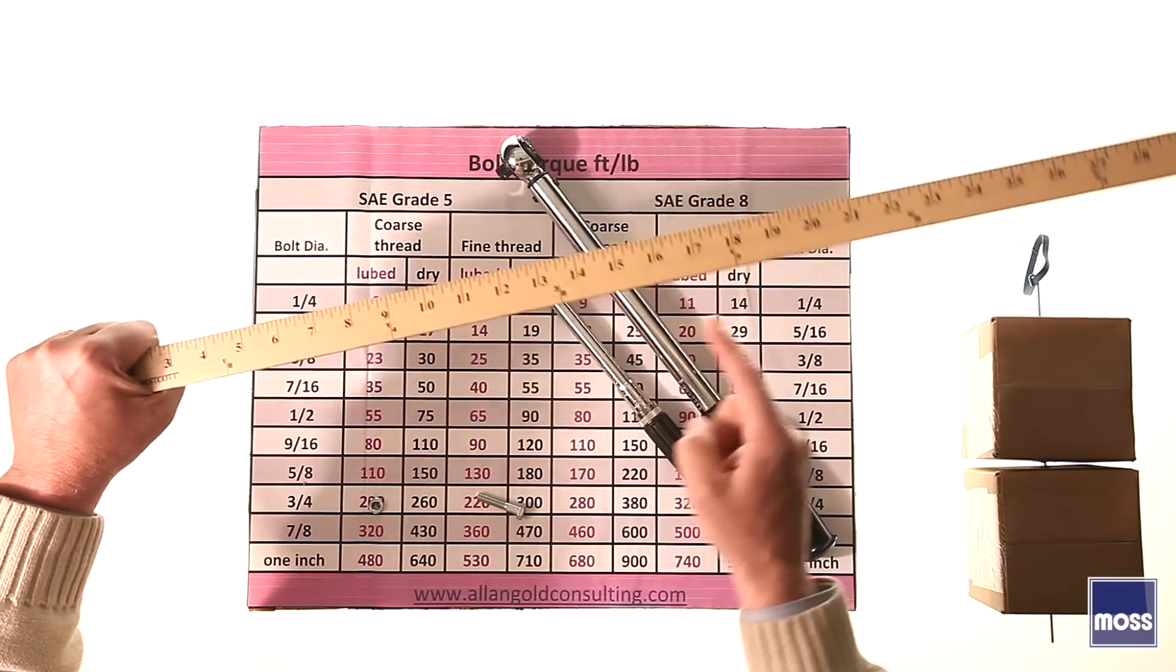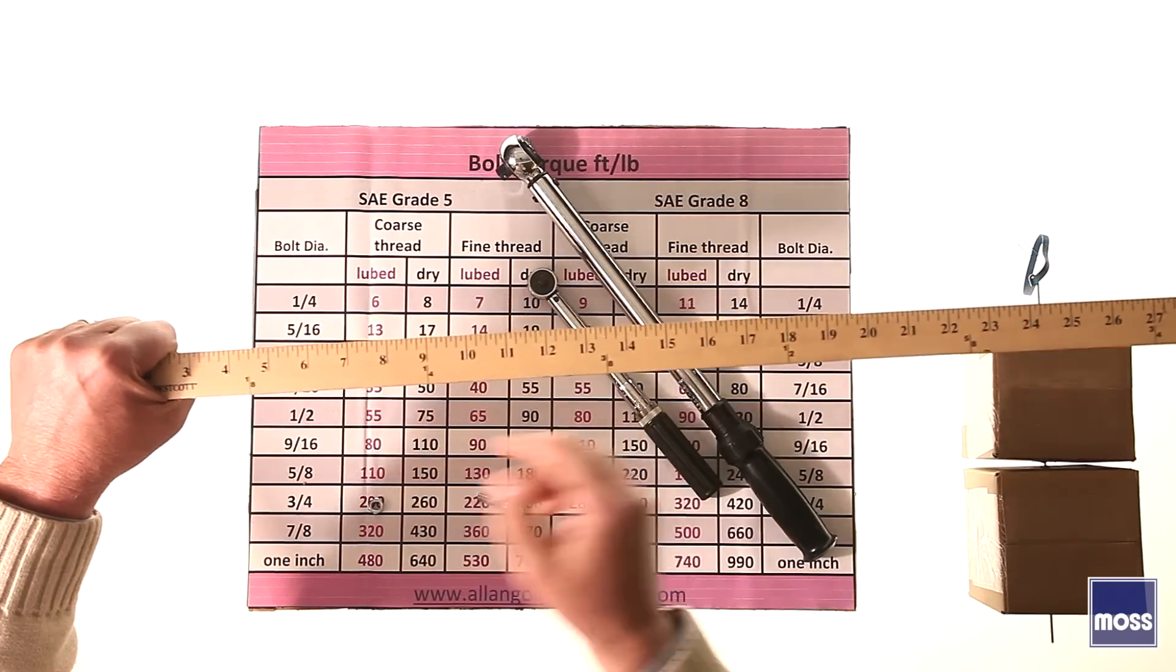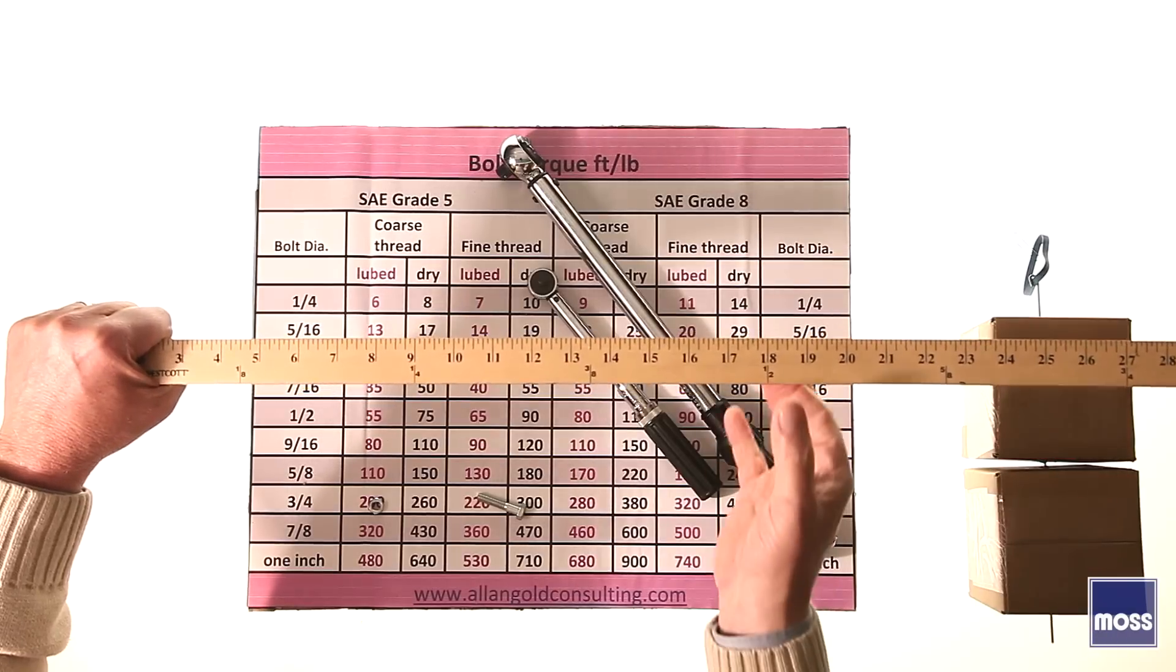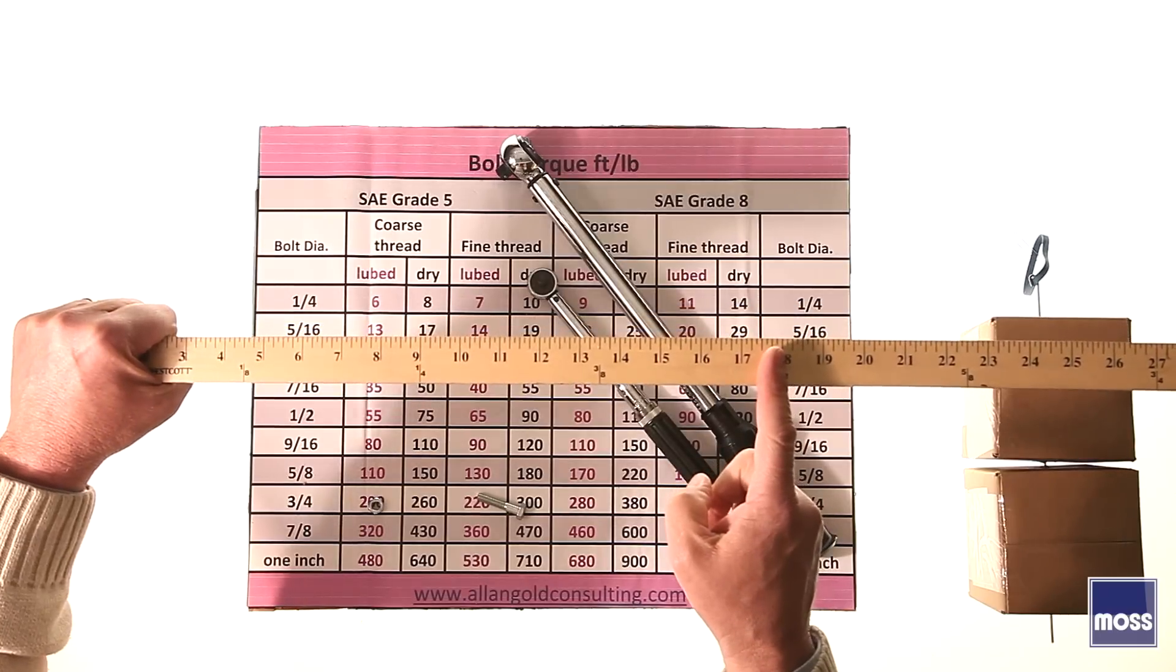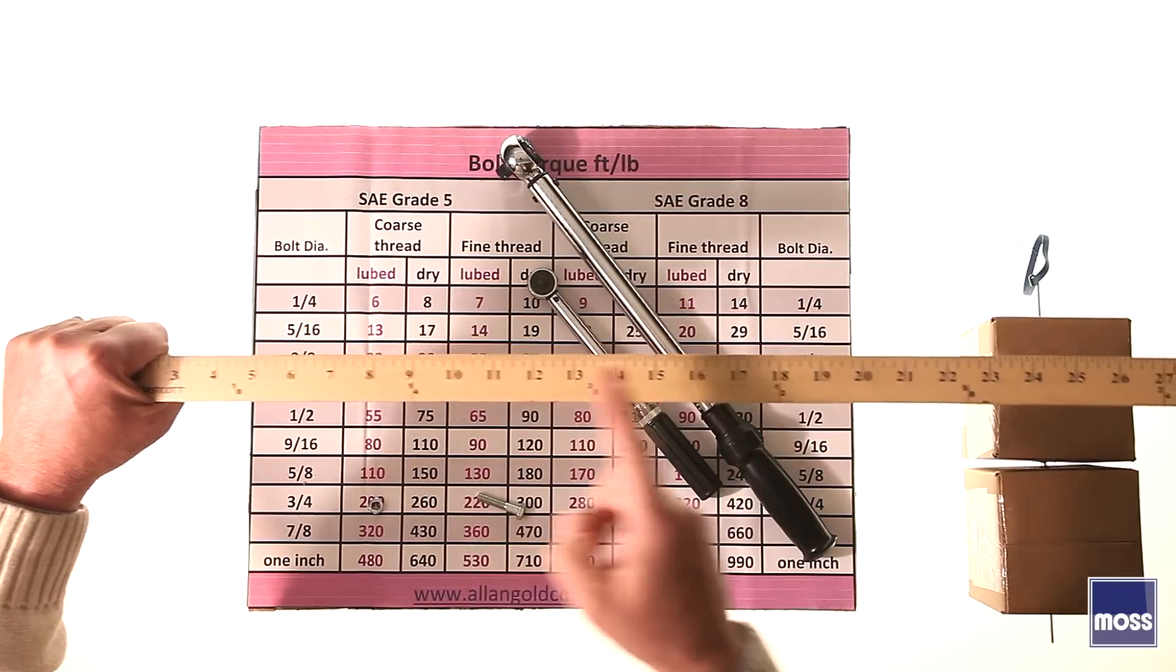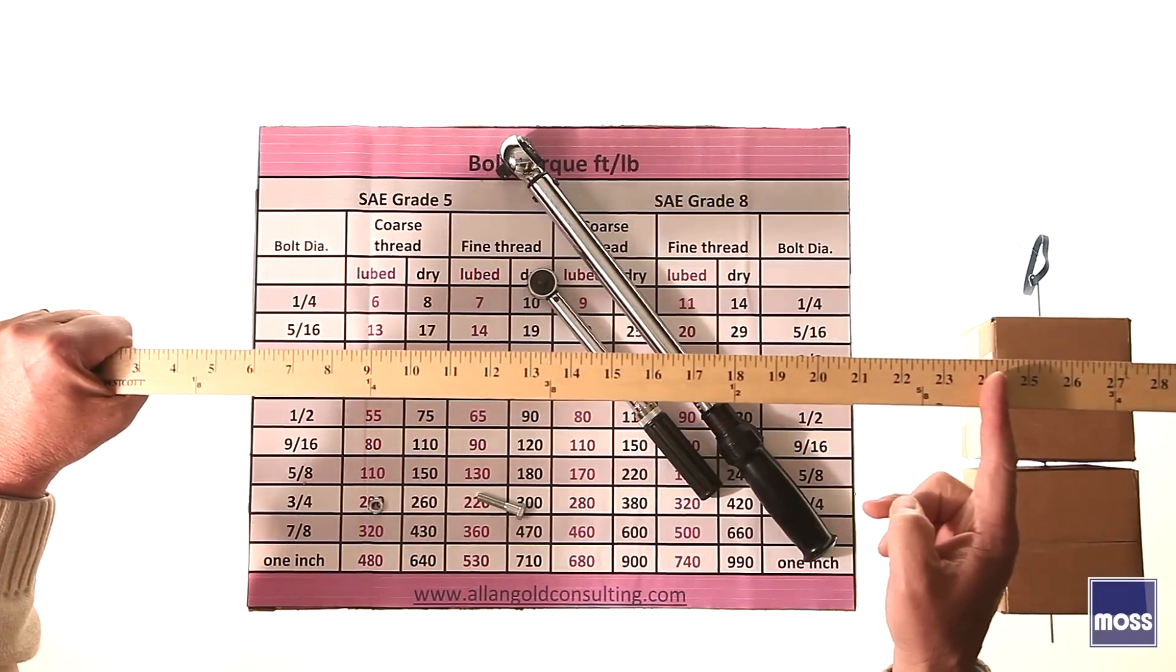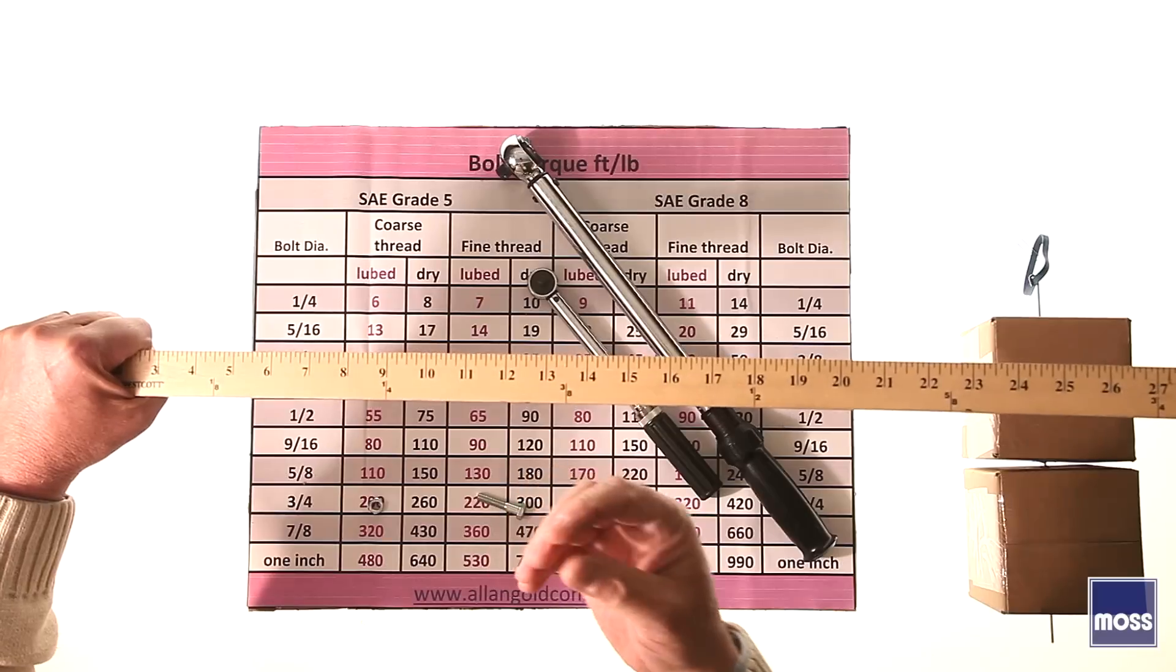It's the exact same thing as if I took a torque wrench, set it for nine foot-pounds, and did this. If I hang a 10-pound weight at 1.5 feet, that's 15 foot-pounds. If I go out to two feet, two feet times 10 pounds would be 20 foot-pounds. So now we can begin to see where the numbers come from.